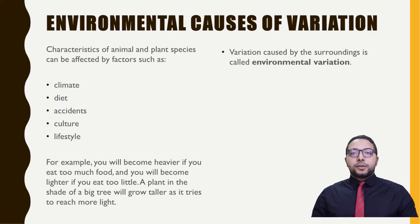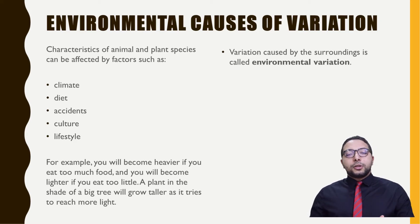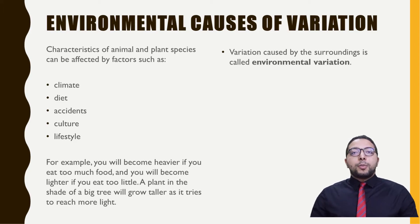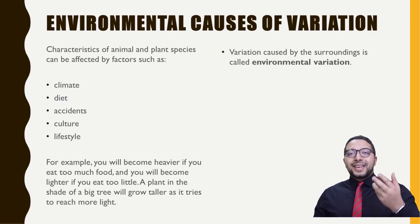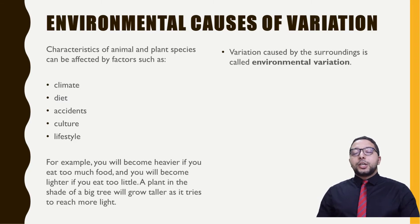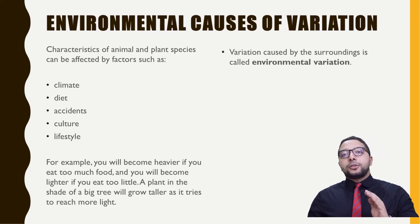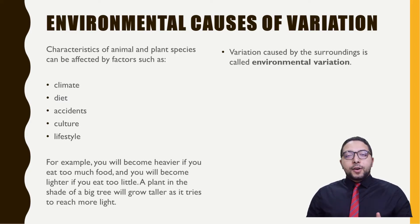The other factor is called environmental variation, which is caused by the environment. For example, climate: people living in places with high sun exposure may develop darker skin, while others in low-sunlight regions may develop lighter skin. Diet is another factor — eating a lot can cause weight gain and a thicker body, while eating in moderation leads to a thinner body. Accidents, culture, and lifestyle can all cause variation between humans.